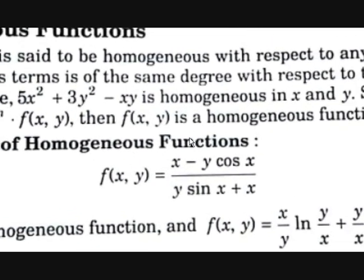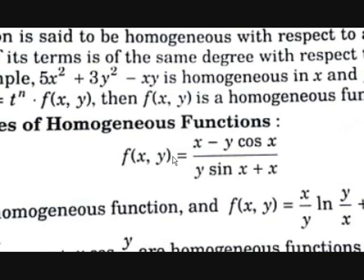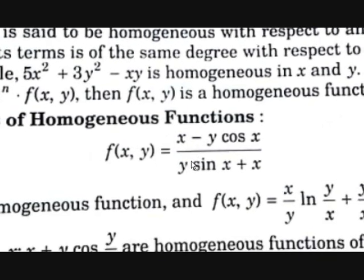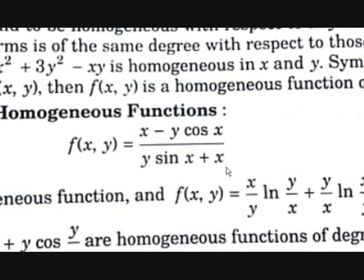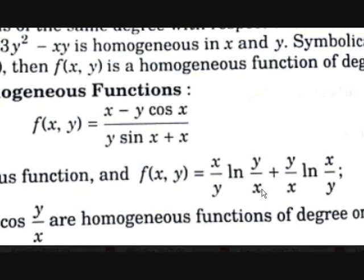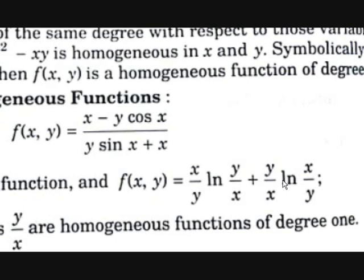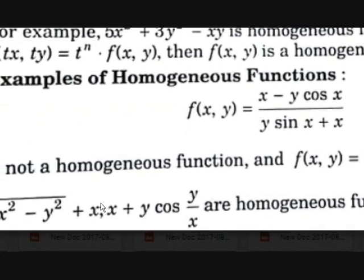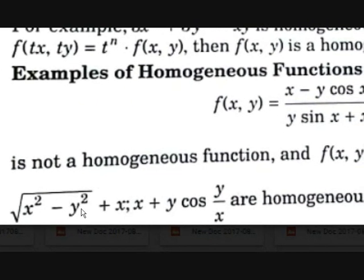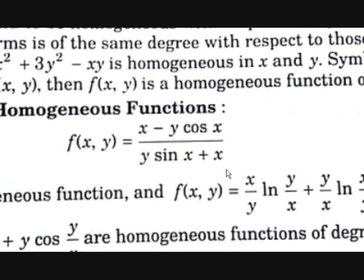Examples of homogeneous functions of degree 1 include: f(x, y) = (x/y)·ln(y/x) + (y/x)·ln(x/y), and √(x² − y²) + x, and x + y·cos(y/x). Note that f(x, y) = x − y·cos(x/y)·sin(x) + x is not a homogeneous function.